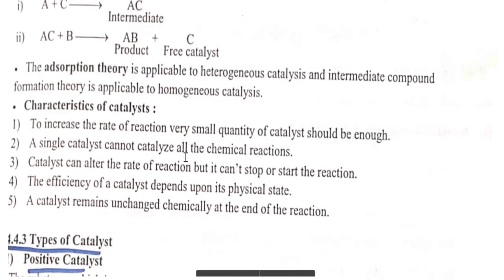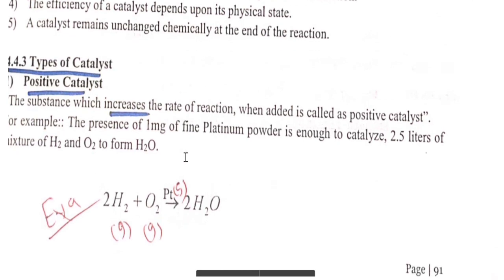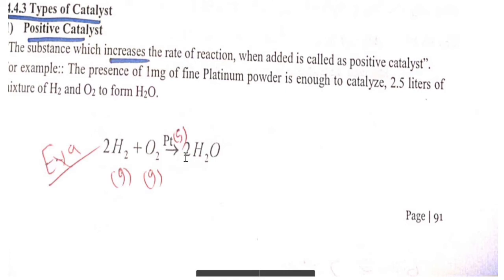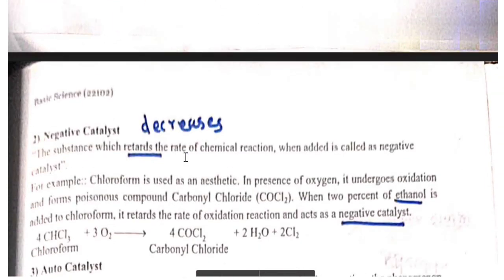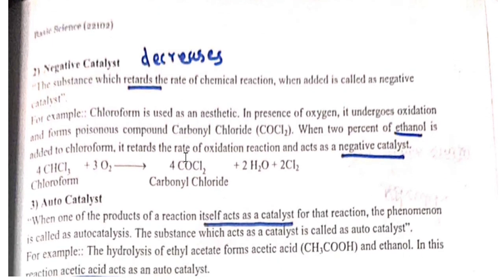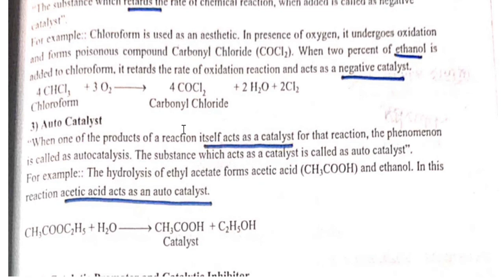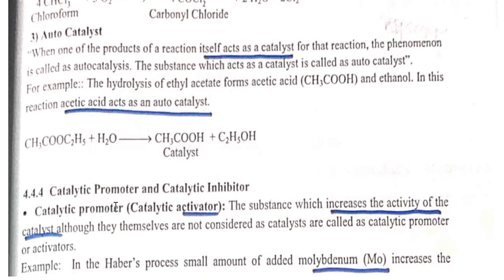Positive catalyst increases the rate of reaction. Example: platinum acts as a positive catalyst. Negative catalyst retards or decreases the rate of reaction. Example: ethanol acts as a negative catalyst in the oxidation of chloroform. Autocatalyst: a product of the reaction itself takes part as a catalyst. Example: acetic acid (vinegar) is an example of autocatalyst.